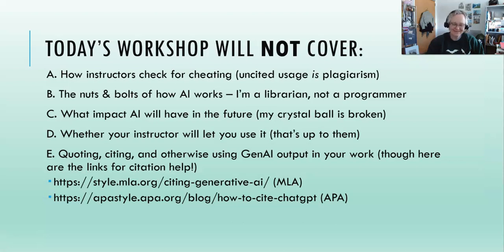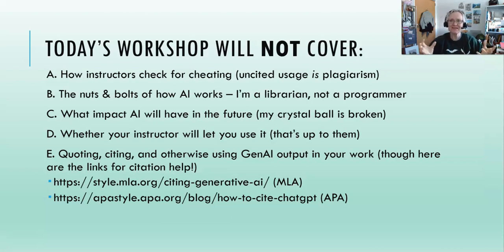Which leads to: don't plagiarize. Quotations should be cited any time that you paraphrase work, or use work created by another person or computer being. You need to make sure that you cite it. If you take a picture of the two links on your screen, the Modern Language Association and the American Psychological Association are the two main citation format groups we use at Santa Monica College, and they do have posts on their website for how to correctly cite generative AI — whether it's ChatGPT or Perplexity AI or one of the others — using their format.